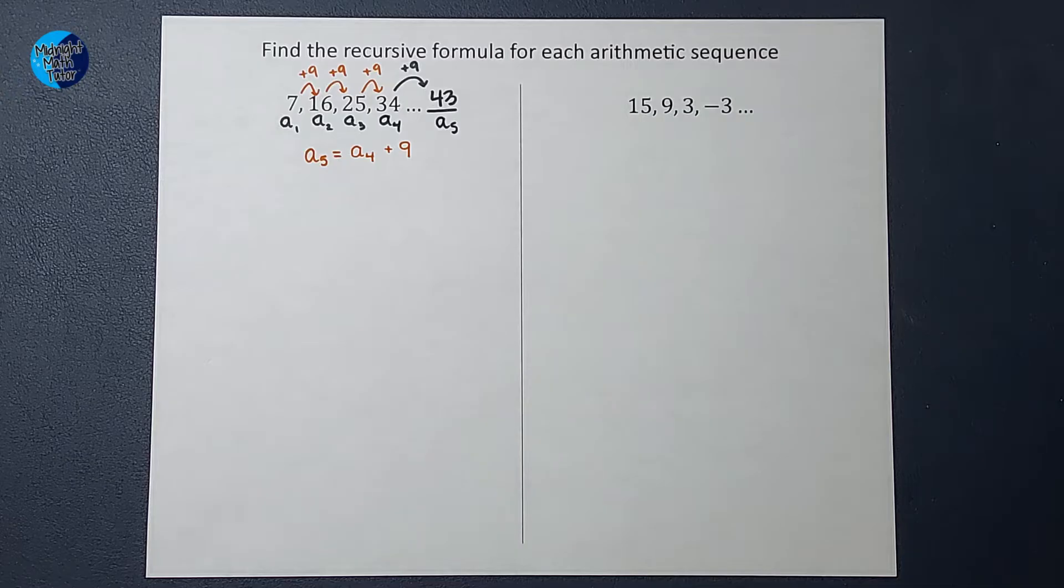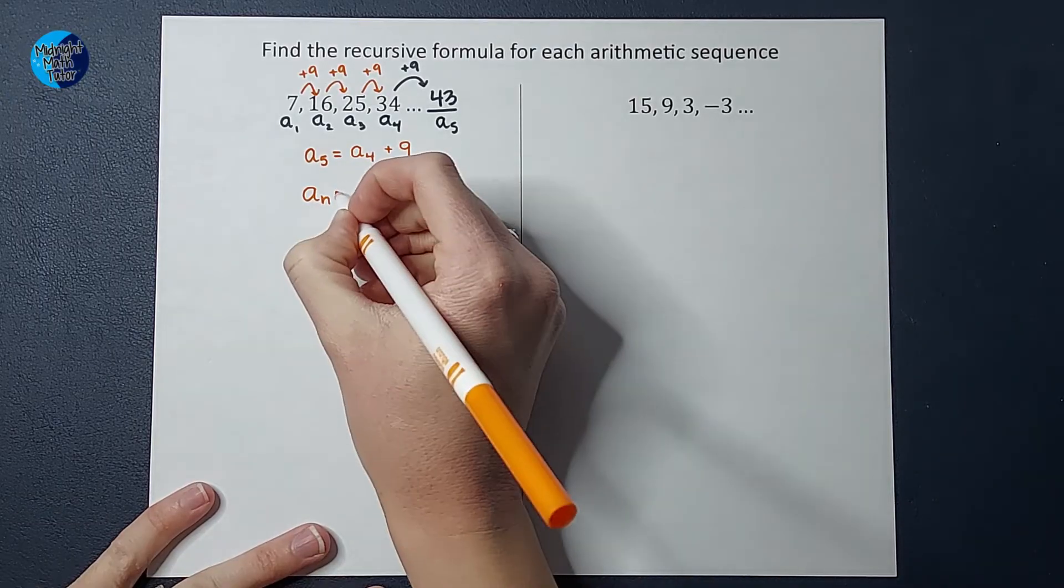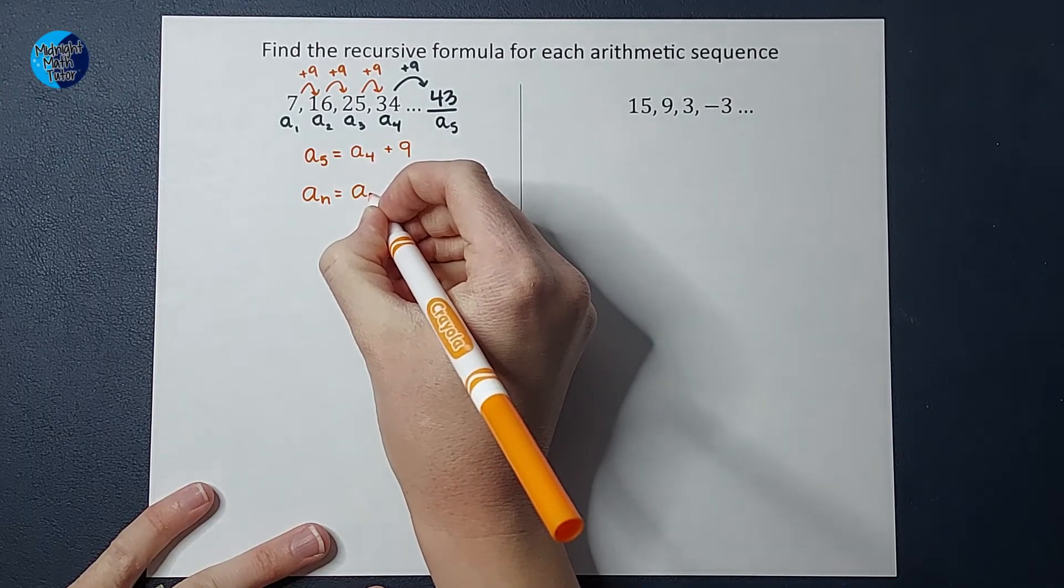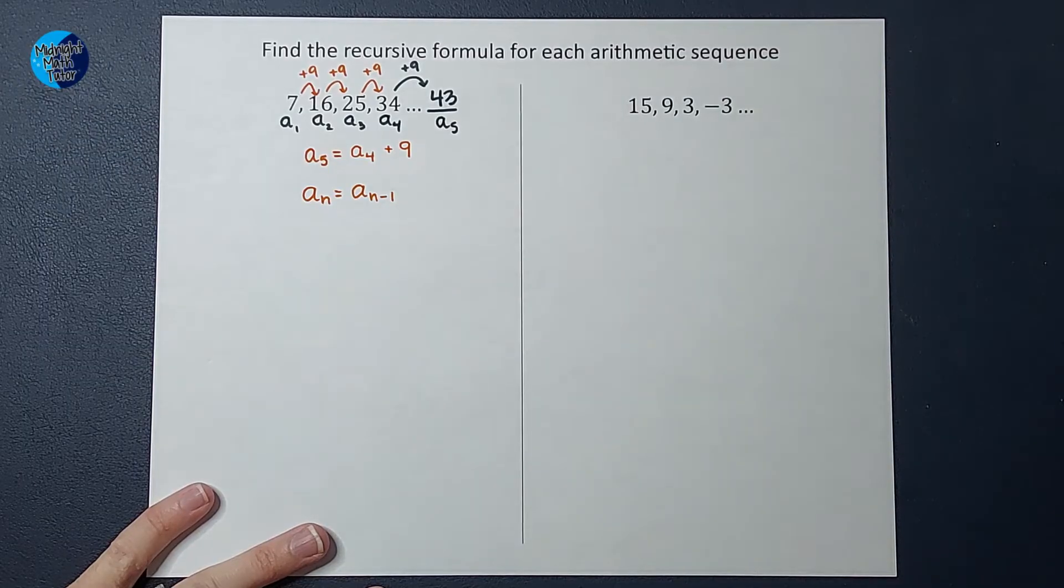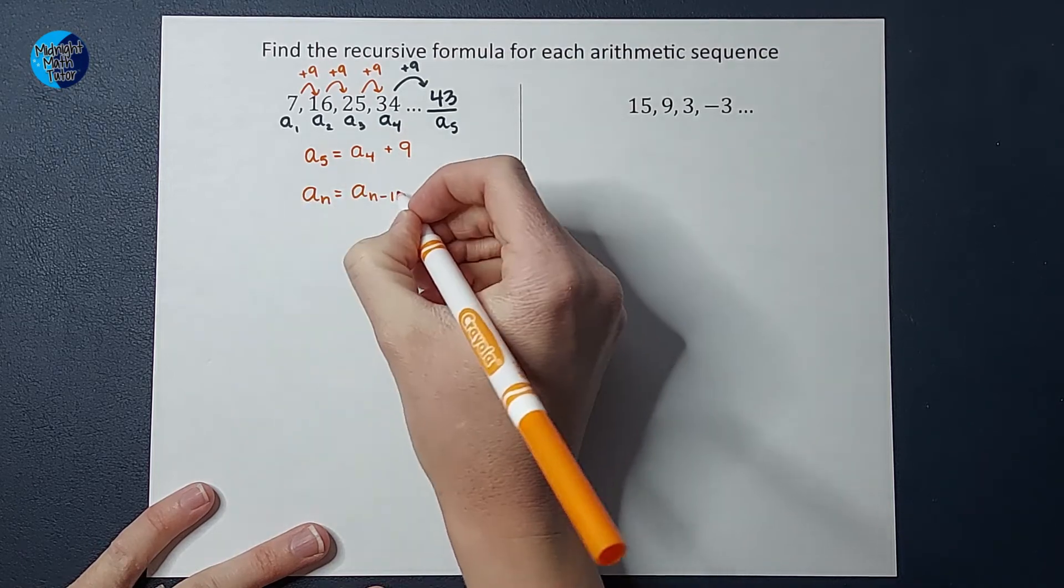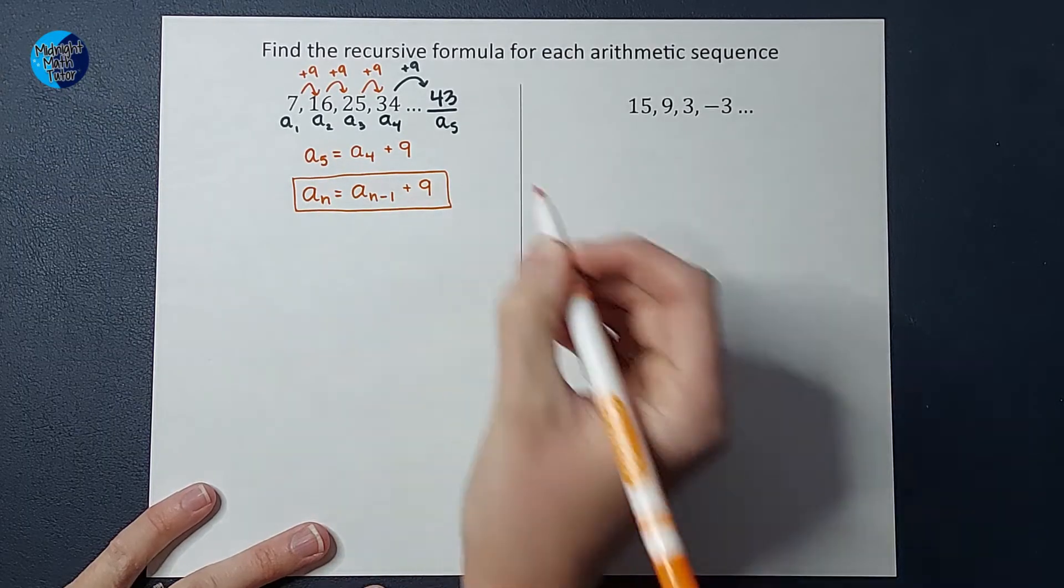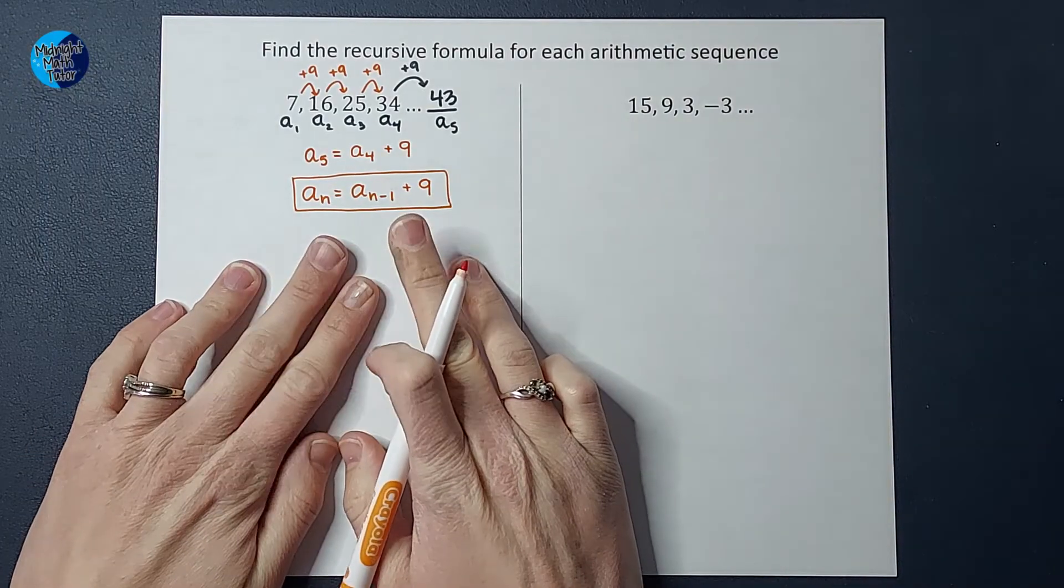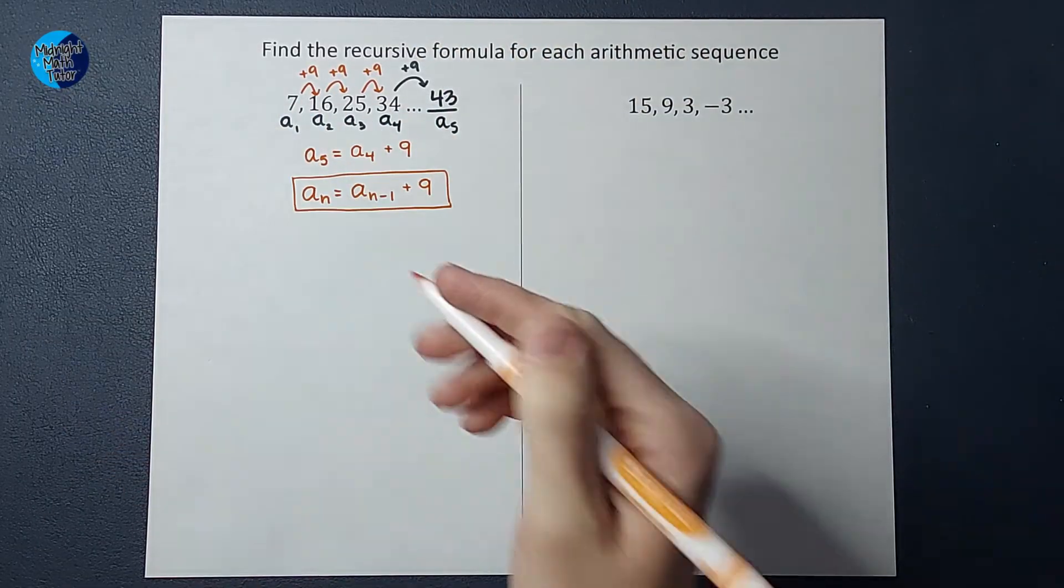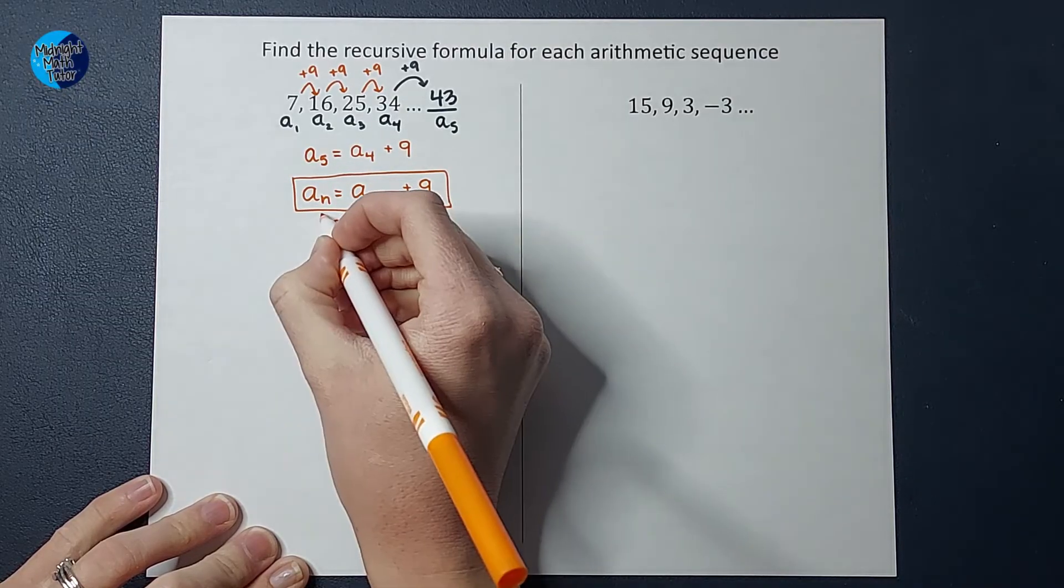But I want to do that for any number in the sequence. So how do I show that? For whatever number you want to find, take the one before it. How do I say that in math language? I say A sub N equals A sub N minus one plus nine, because five minus one is four. So this means take the number before it and add nine. This is our recursive formula. But for this to be helpful, I need to note what the first term in my sequence is. A sub one is seven.